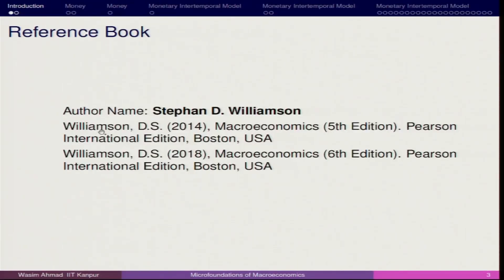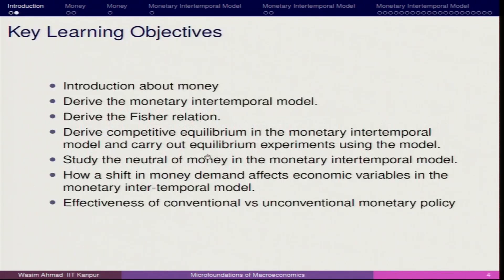The reference book remains the same — Stephen D. Williamson. The objective remains the same: we will arrive at the monetary intertemporal model, superimpose the Fisherian idea, and understand the role of the real context. We will derive the competitive equilibrium, initiate the debate of neutrality, and then examine the effectiveness of conventional and unconventional monetary policy.